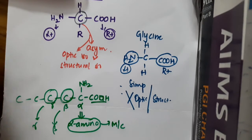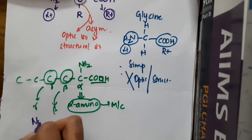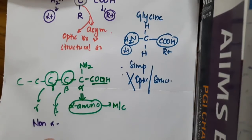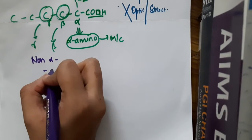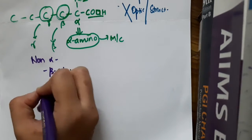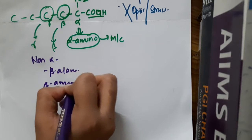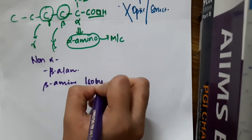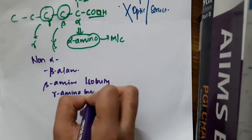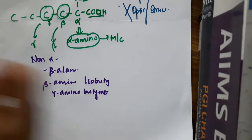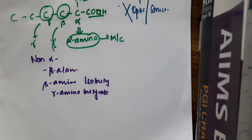But are there any non-alpha amino acids? Yes. The non-alpha amino acids include beta alanine, beta amino isobutyrate, and gamma amino butyrate.